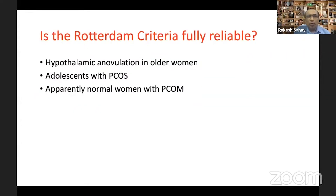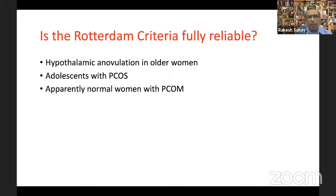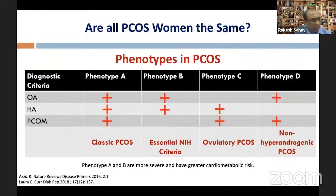An important part of the history is the timing of symptom onset — if symptoms appeared within years after puberty or have suddenly worsened, other diagnoses are more likely. There are also specific diagnostic issues with adolescents, apparently normal women with PCO morphology on ovaries, hypothalamic anovulation, and older women, where there can be confusion in diagnosis.